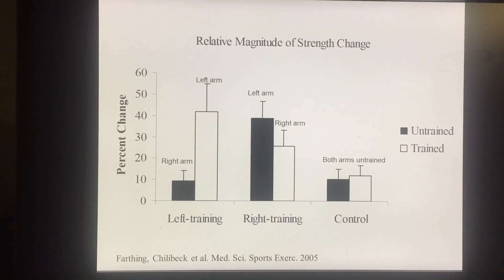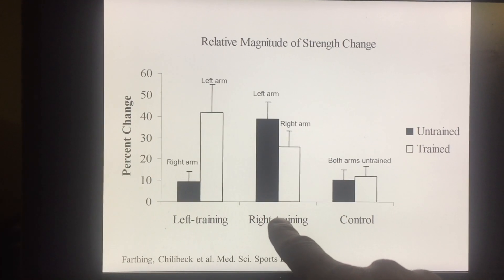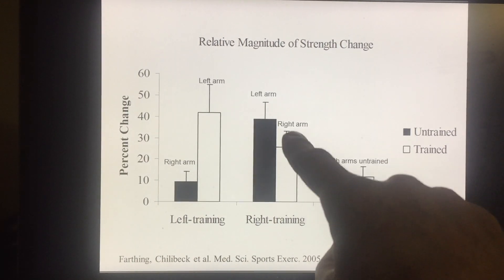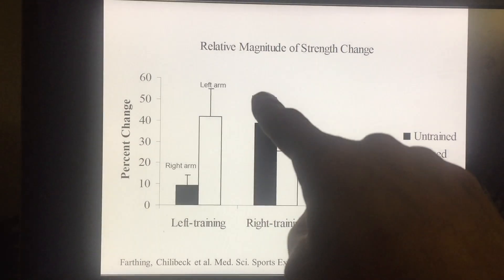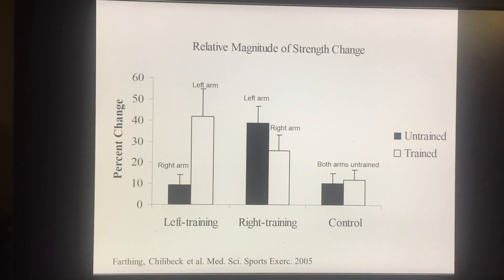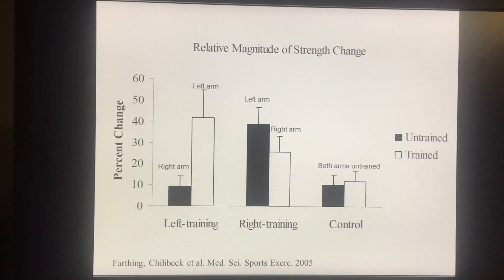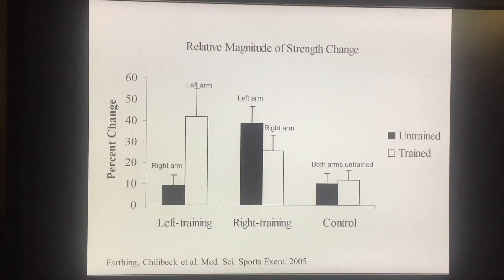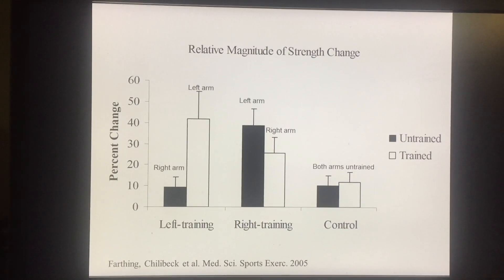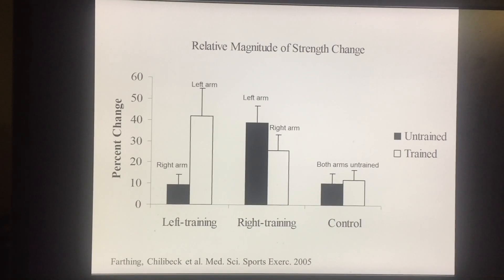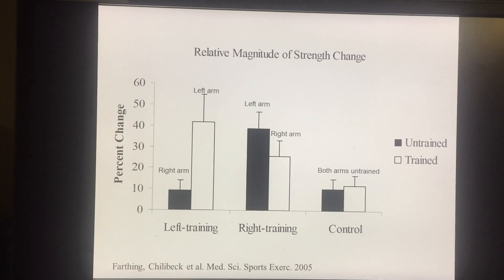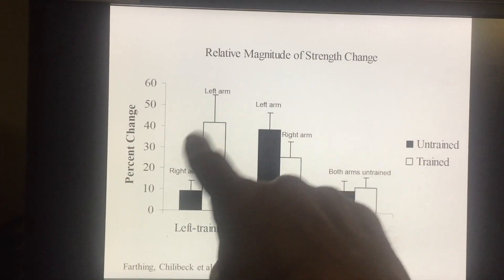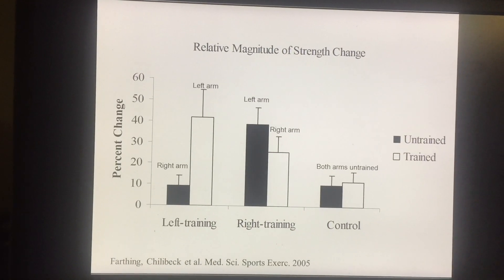The really strange result was that the group that trained their right arm saw an increase in strength of the trained arm, but also a huge increase in strength of the untrained arm. In this particular study, there was a great amount of cross-education: training the right arm — the dominant arm — led to an increase in left arm strength, which was untrained. Whereas training the left arm showed hardly any crossover of strength to the untrained arm.